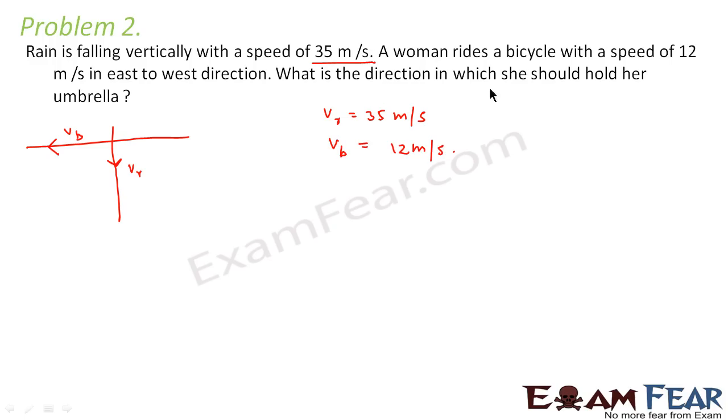So velocity of the rain is 35 meter per second and velocity of the bicycle is 12 meter per second. Now what is the direction in which she should hold her umbrella? Now let us suppose, the same concept initially: suppose the rain is falling in this direction. Now since the woman is moving in this direction, she will feel that the rain is falling somewhere in this direction. That is how it happens.